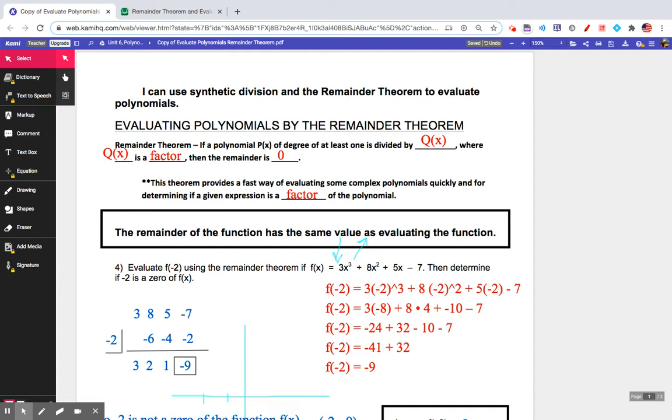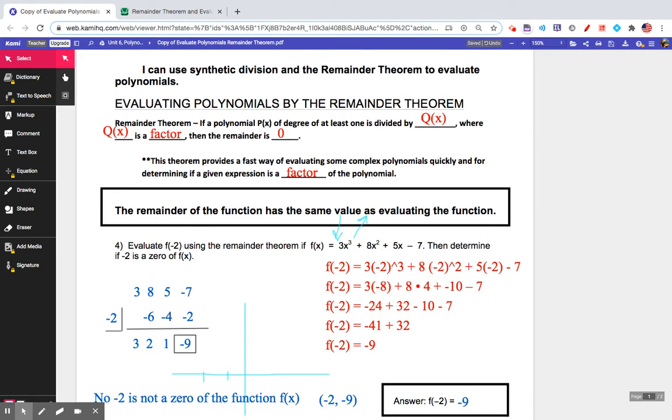If I divide a polynomial by another polynomial and I get a remainder of zero, it tells me my divisor is a factor. This theorem also provides a fast way of evaluating complex polynomials quickly and for determining if a given polynomial is a factor of the polynomial.